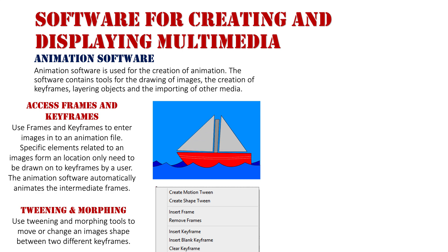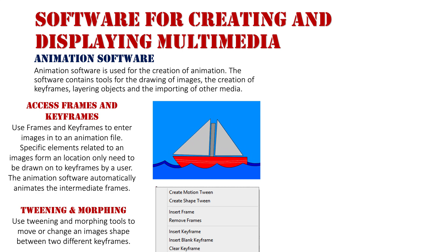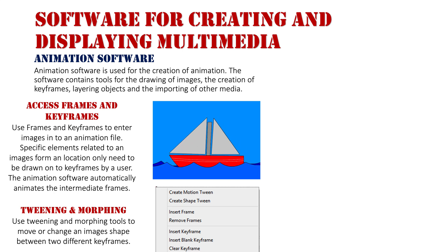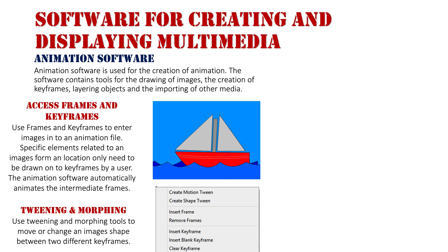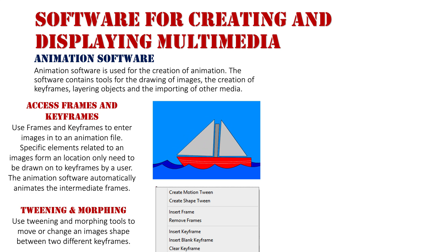For example, if my boat suddenly transformed into a plane, its pixels would all separate and then reform as the shape of a plane. You can morph any image from one image into another, but you need to establish that through the use of keyframes. That's how morphing or shape tweening differs from part-based tweening.